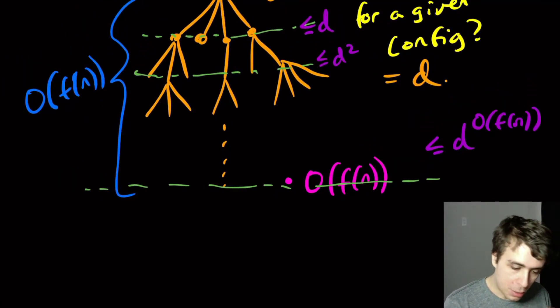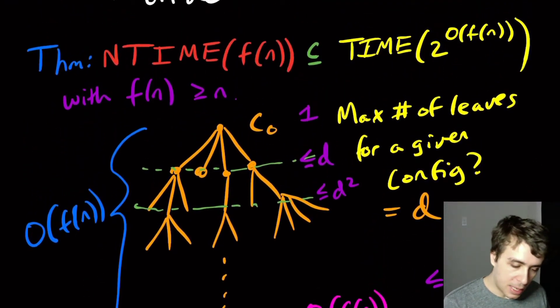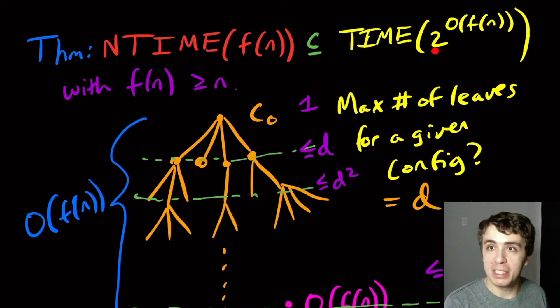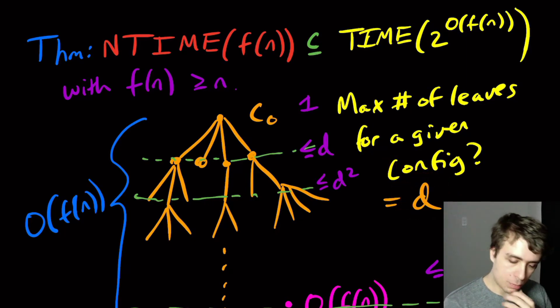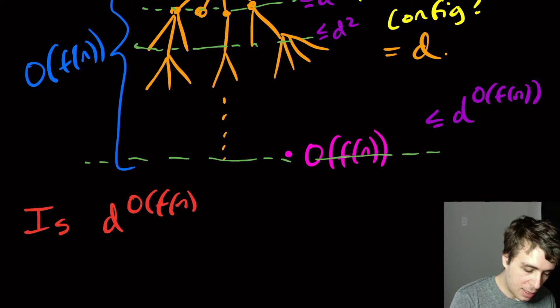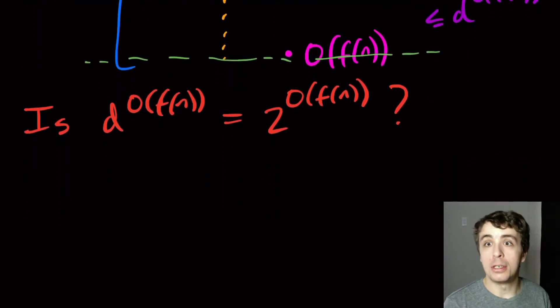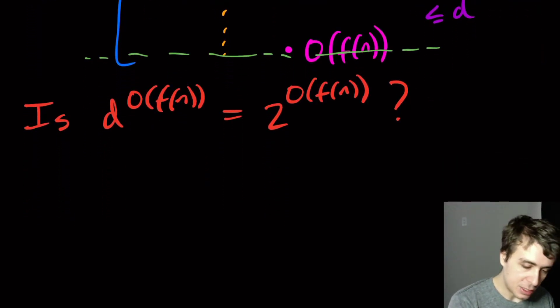But so you may think, okay, well, this deterministic machine runs in D to the big O of f(n) time, and you'd be right. But here in the theorem statement, I said that there's explicitly a two here, and that's independent of the D parameter. So the question I want to answer is, is D to the big O of f(n) equal to 2 to the power big O of f(n)? And the answer is, in fact, yes. So this is true.